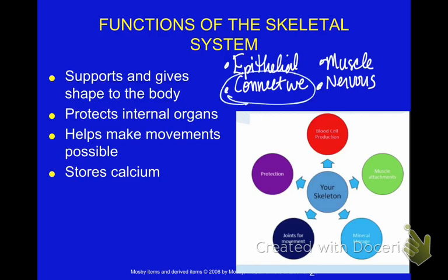What is a characteristic common to our connective tissues? We had living cells surrounded by a non-living material going around those living cells — the matrix. The matrix in bones is the portion of the bone that stores the calcium. It's stored in the matrix.